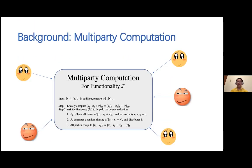Secure multiparty computation is a protocol where all parties participate to emulate such an ideal functionality. The protocol describes how each party should interact with others. It guarantees that the protocol execution does not leak anything about the individual inputs beyond what can be inferred from the function output, just as if it is computed by a trusted third party.